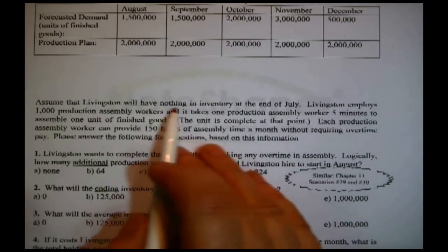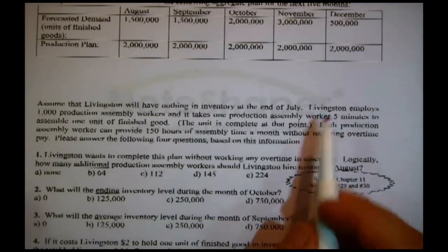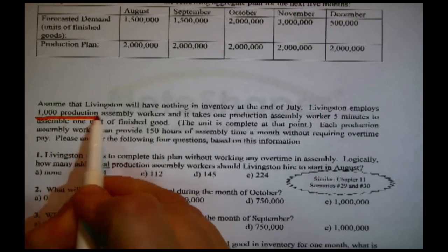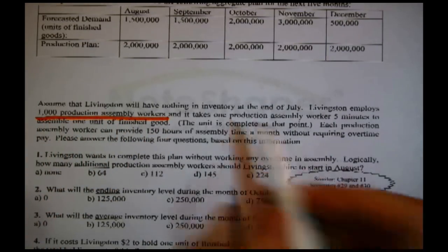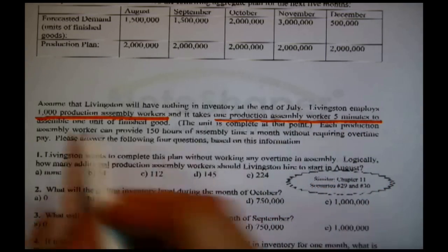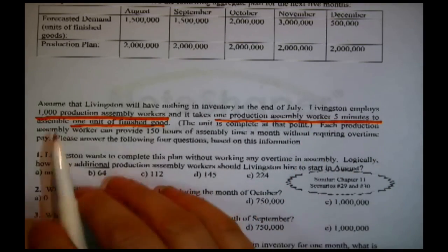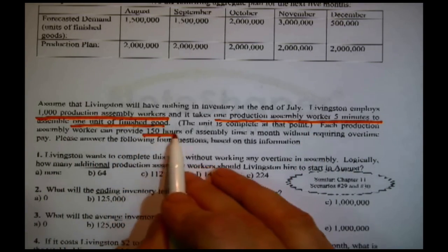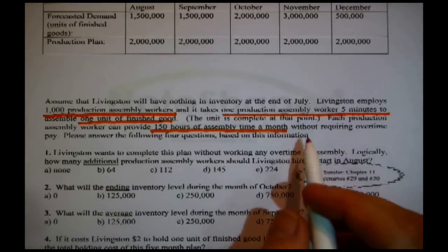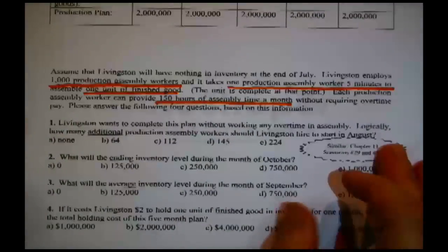The plan is finished. Assume Livingston will have nothing in inventory at the end of July — that means they're starting with nothing. Livingston employs 1,000 production workers, and it takes one assembly worker five minutes to assemble one unit of finished good. Each production assembly worker can provide 150 hours of assembly time a month without requiring overtime pay.